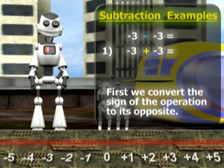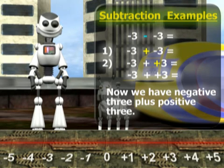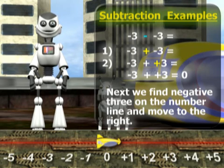First, we convert the sign of the operation to its opposite. So subtraction becomes addition. Next, we change the sign of the second number. It's negative now, so we'll change it to positive. Now we have negative three plus positive three. We find negative three on the number line and move to the right to end up on zero.